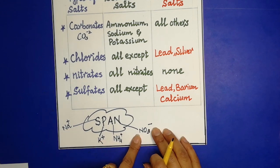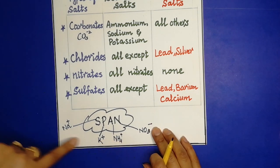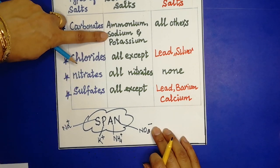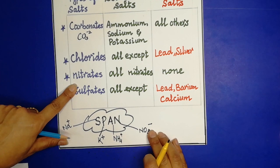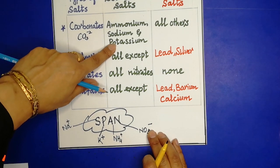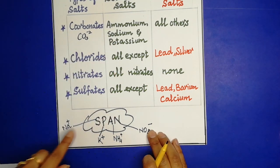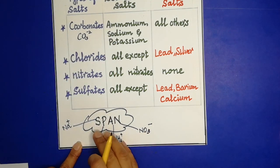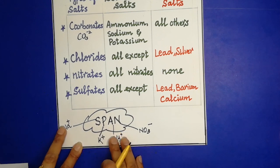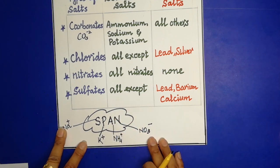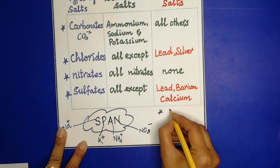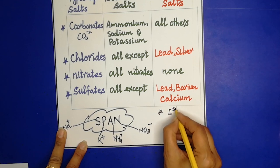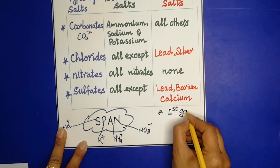SPAN stands for: all Sodium, Potassium, Ammonium, and Nitrate salts are soluble. Any salt that contains these ions is soluble. So all sodium salts are soluble, all nitrate salts are soluble, all ammonium salts are soluble, and all potassium salts are soluble.